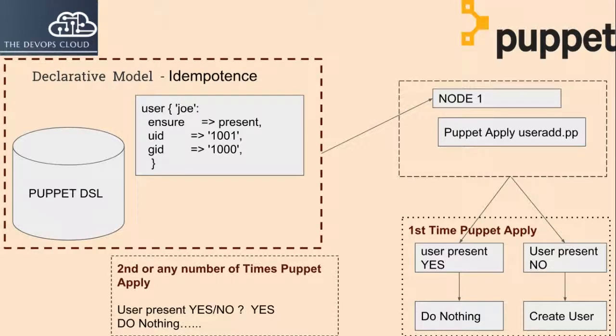Idempotency is important because in the Puppet master-agent model, the agent checks the master every 30 minutes or so to get the catalog. Without idempotency, the master would not check the current state of the system and would try to reapply the changes. We don't want Puppet to reapply changes if the system is already at the desired state, so idempotency plays an important role in Puppet.